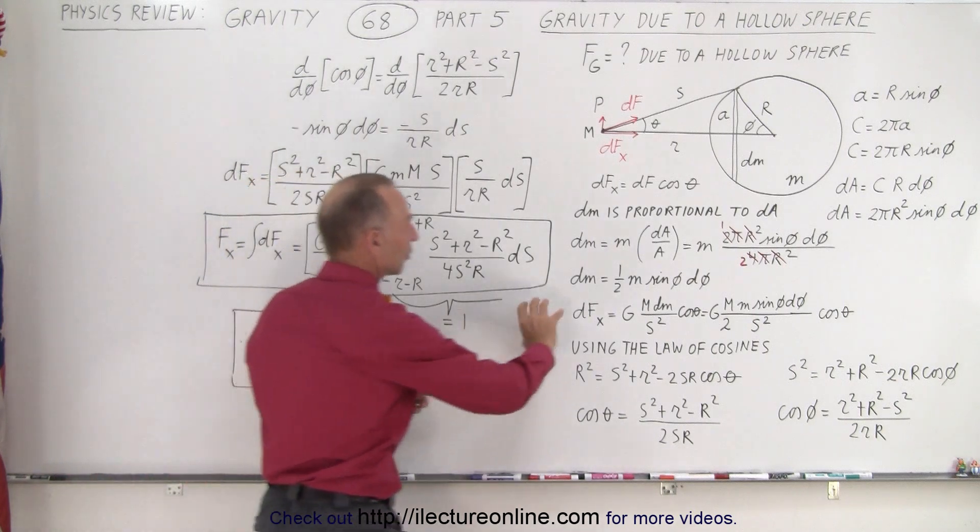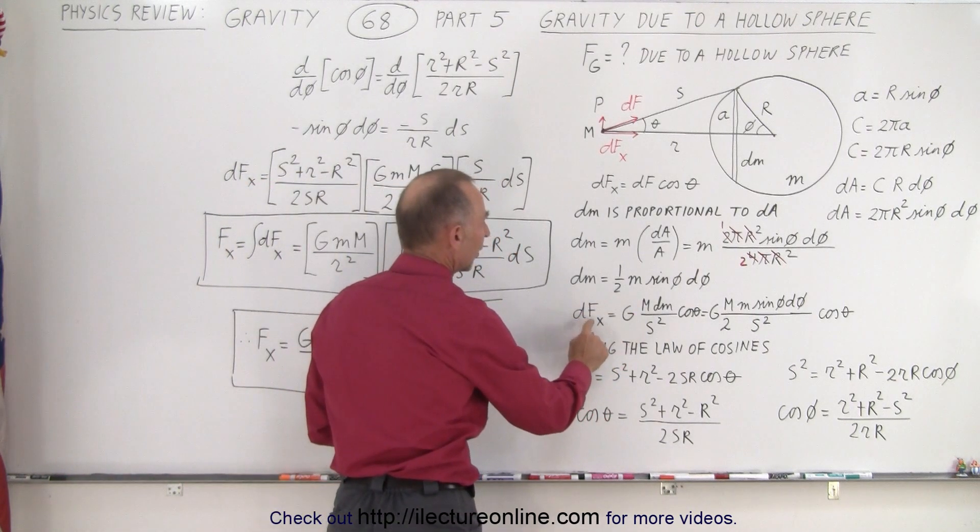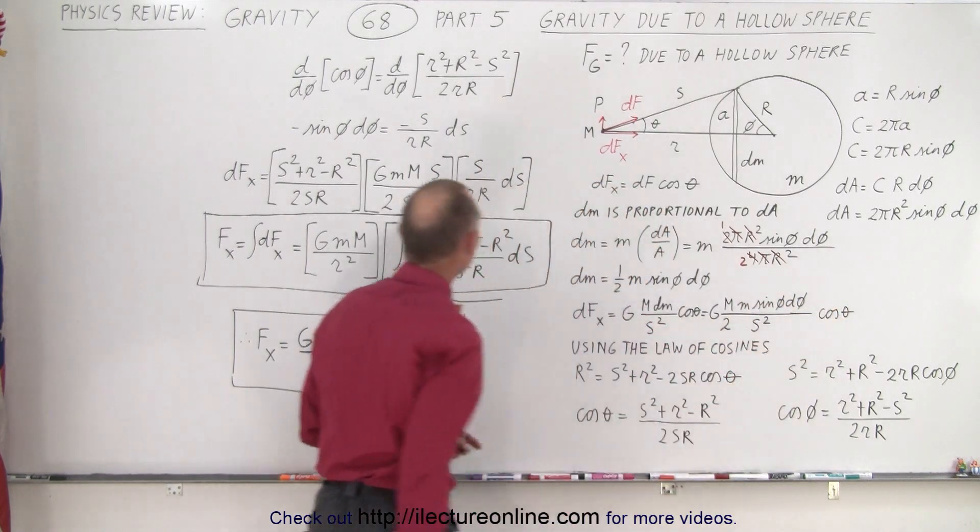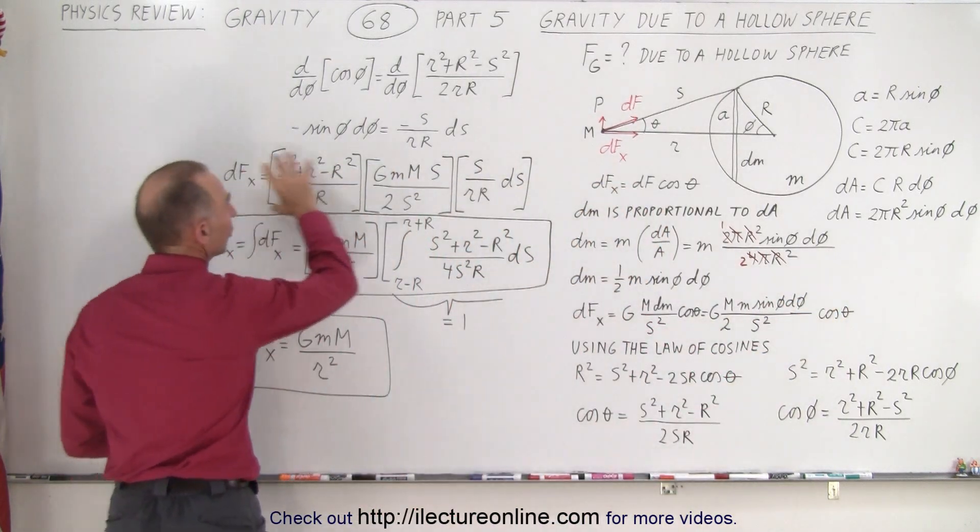Then we plug that into our original equation, the derivative of F_x equal to this. We now substitute for sine of phi and the cosine of theta and we end up with this equation right here.